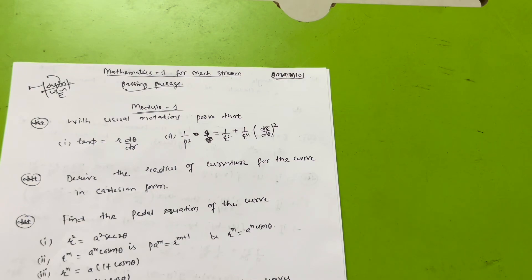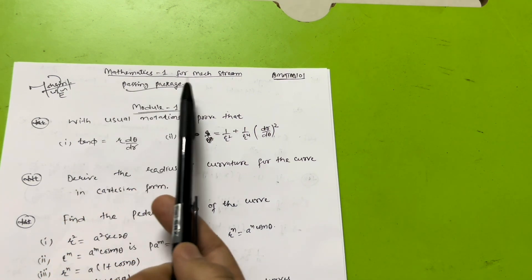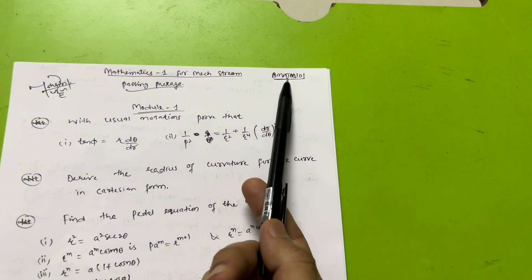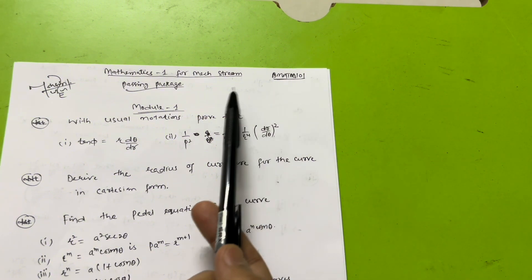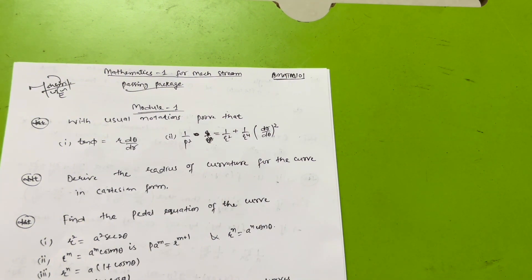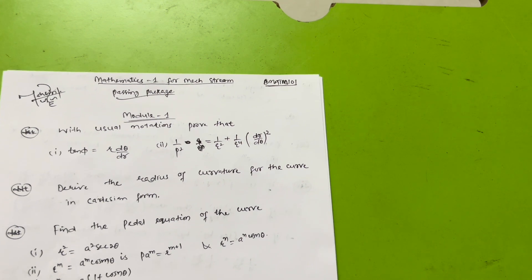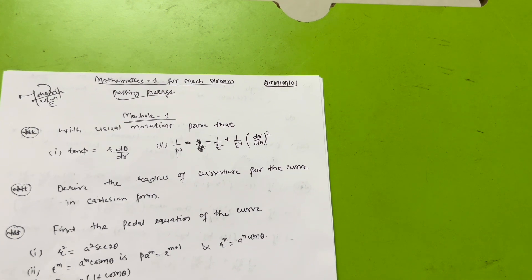Dear first semester mechanical engineering stream students, hope you are all doing well and hope you have started your preparation. In this video I will be discussing the passing package for your first subject, that is Mathematics First, with subject code BMAT M101. If you are new to my channel, make sure you subscribe and hit the bell icon so that you will receive the latest notifications regarding all passing packages.